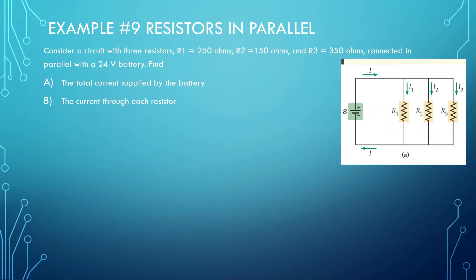Resistors in parallel now — this one's a little more difficult. Consider a circuit with three resistors: R1 equals 250, R2 equals 150, and R3 equals 350, connected in parallel with a 24-volt battery. Find the total current supplied by the battery. Before we can do that, we need to find the total resistance.